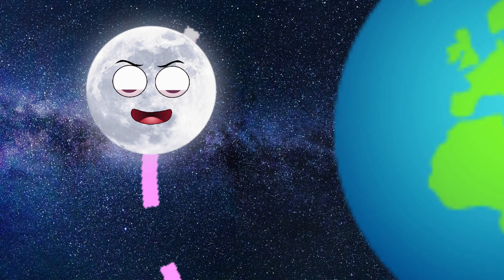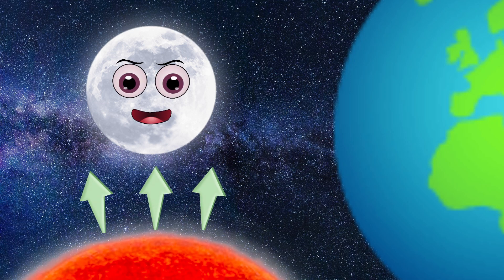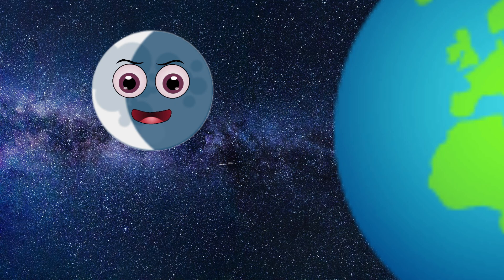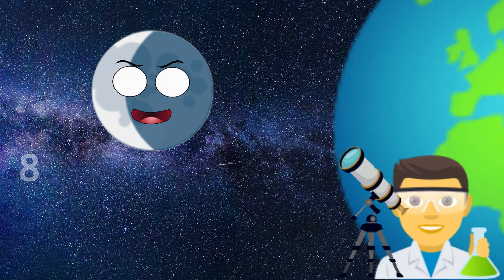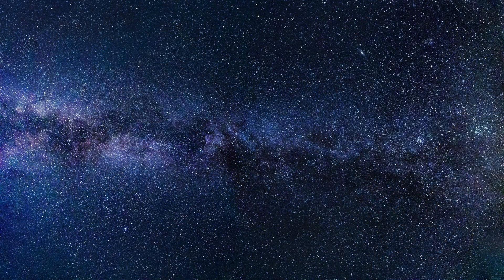So as the moon orbits the Earth, the sun lights up different parts of it, making it seem as if the moon is changing shape. In actual fact, it's just our view of it that is altering. From the Earth, we can observe eight distinct stages of illumination that are traditionally recognized, and these are called lunar phases.